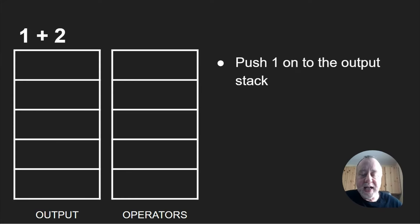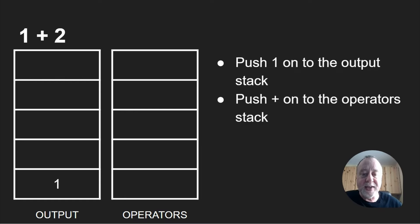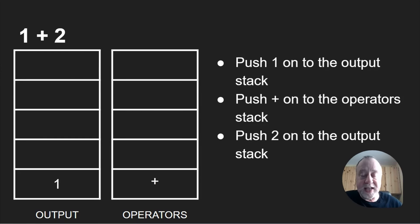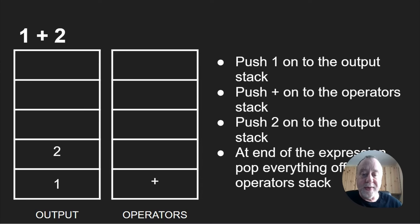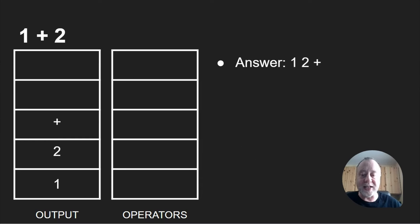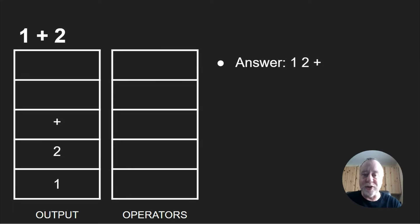The best way to explain is with a demo. Here we're going to analyze one plus two and convert that to postfix. We've got our two stacks: output and operators. First, push the one straight to the output stack. Then push the plus sign onto the operator stack. Then push the two onto the output stack. At the end of the expression, pop everything off the operator stack — and you get: one two plus. That shows the essence of how it works.